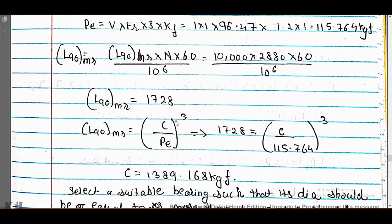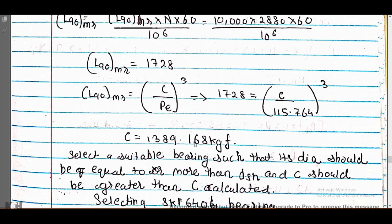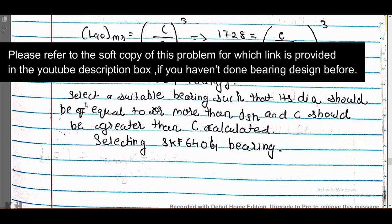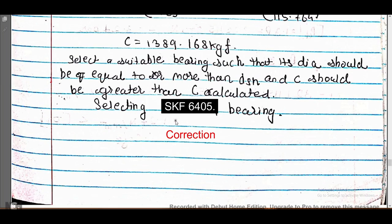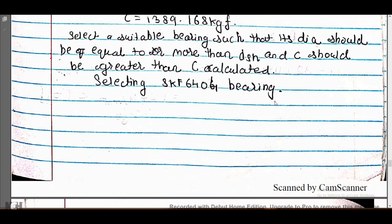Using the formula L90_mr = (C / P_E)³, we get C = 1389.168 kgf. We then select a suitable bearing such that its bore diameter is equal to or greater than D_sh and its dynamic load capacity C is greater than the calculated C. We select the SKF 6404 bearing.